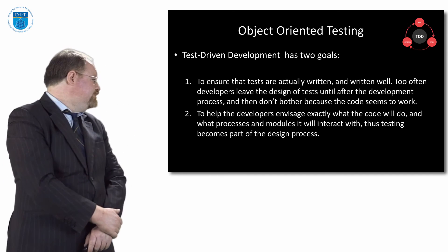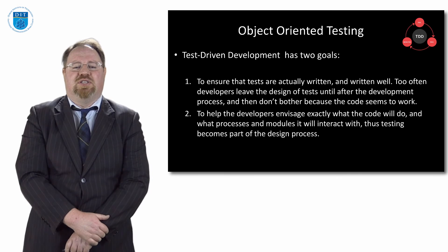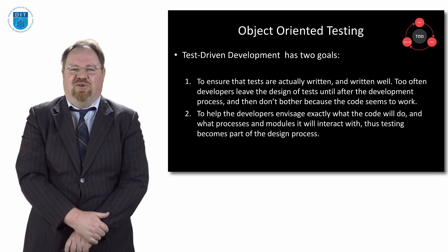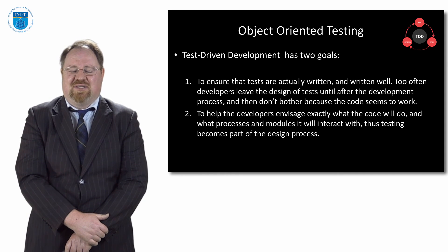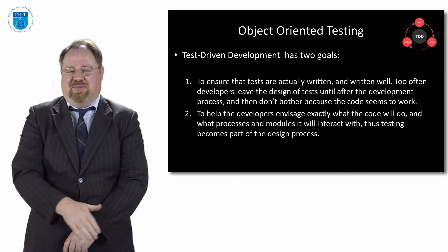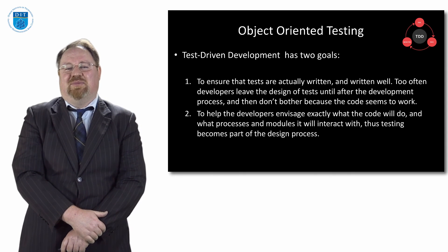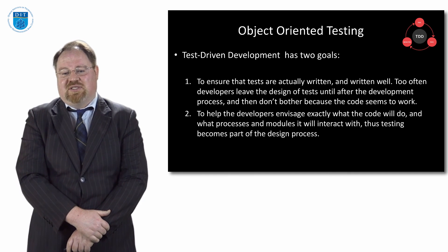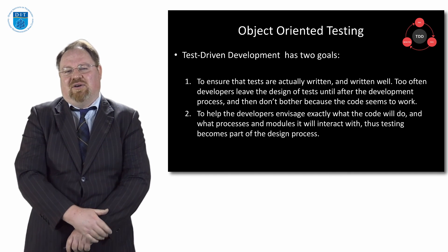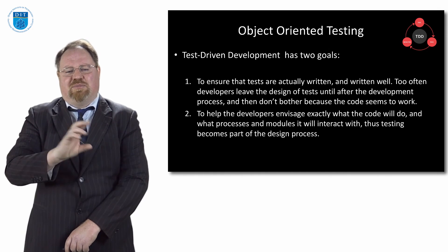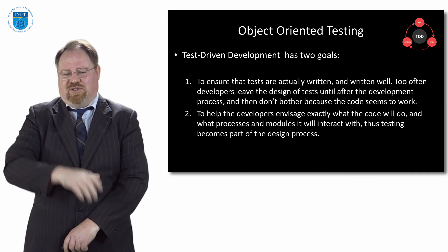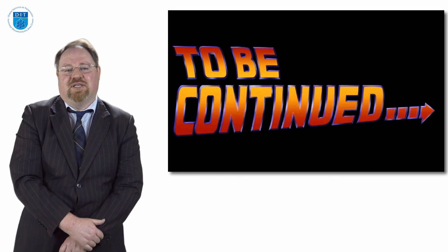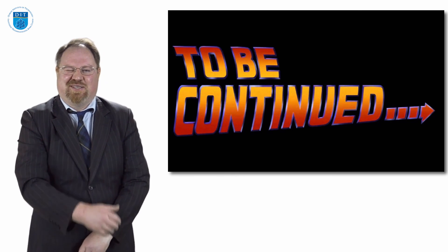Test-driven development has two goals. One is to ensure that tests are actually written, because sometimes when developers write code first and it compiles, they think there's no point writing tests. Most importantly, it ensures they understand how the code works and what different objects, classes, processes, or modules will interact with the program. That's an introduction to testing and test-driven development. Thanks very much, we'll see you on the next episode.